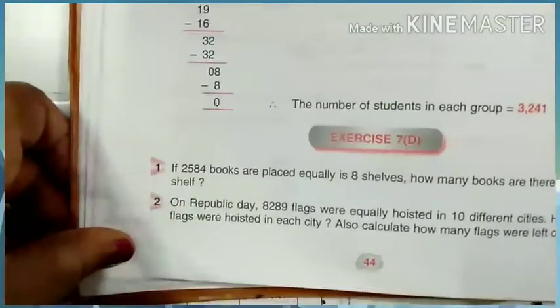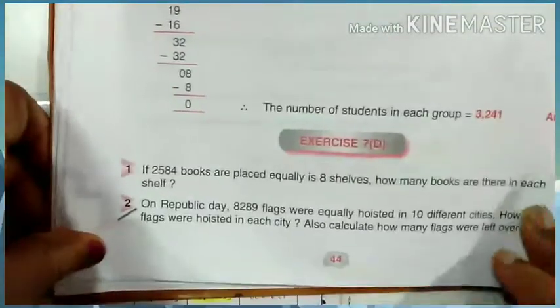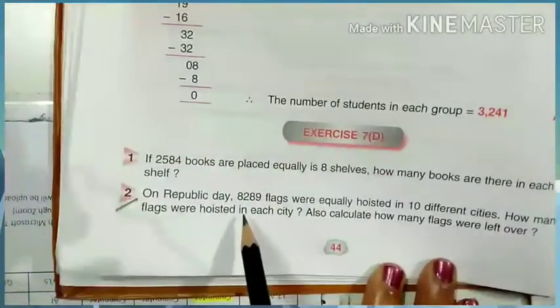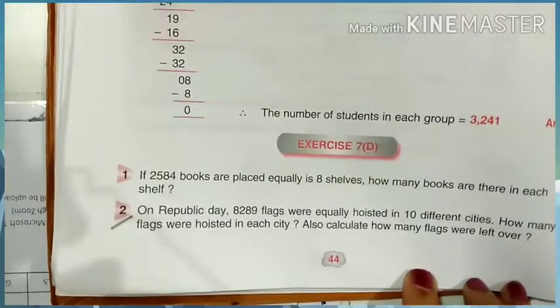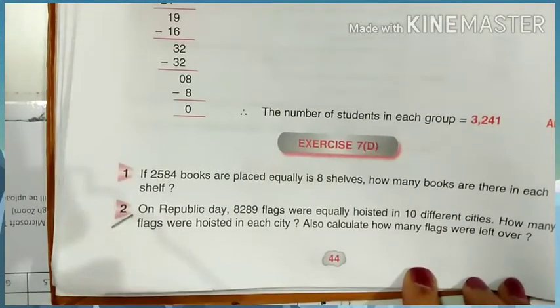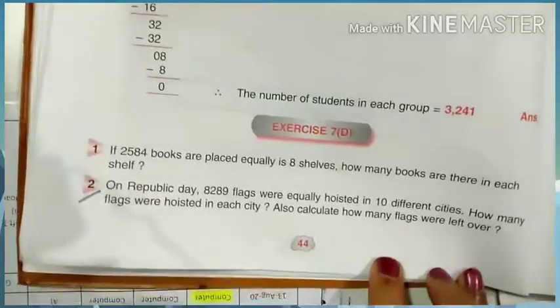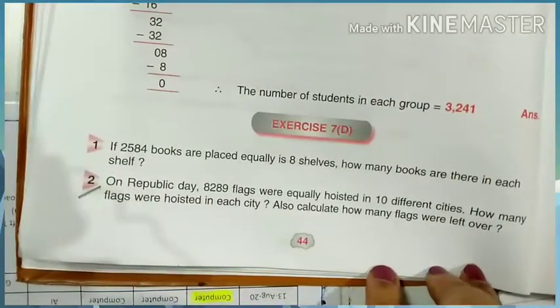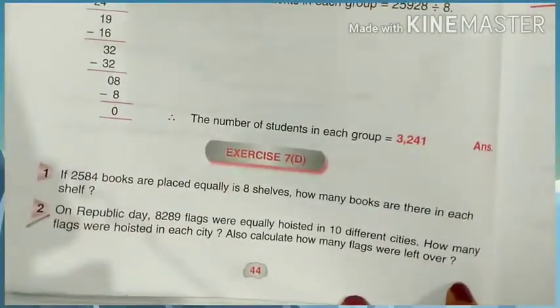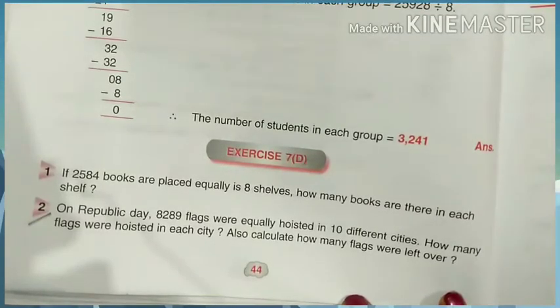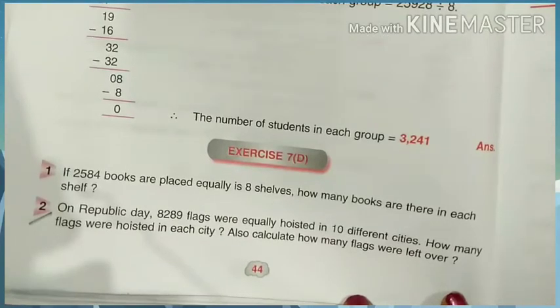Now in word problem, I have already given you a lot of word problems. Let's do question number two so that it will help you to understand. On Republic day 8289 flags were equally hosted in ten different cities. How many flags were hosted in each city? Now in one city many flags were hosted. Also calculate how many flags were left over.